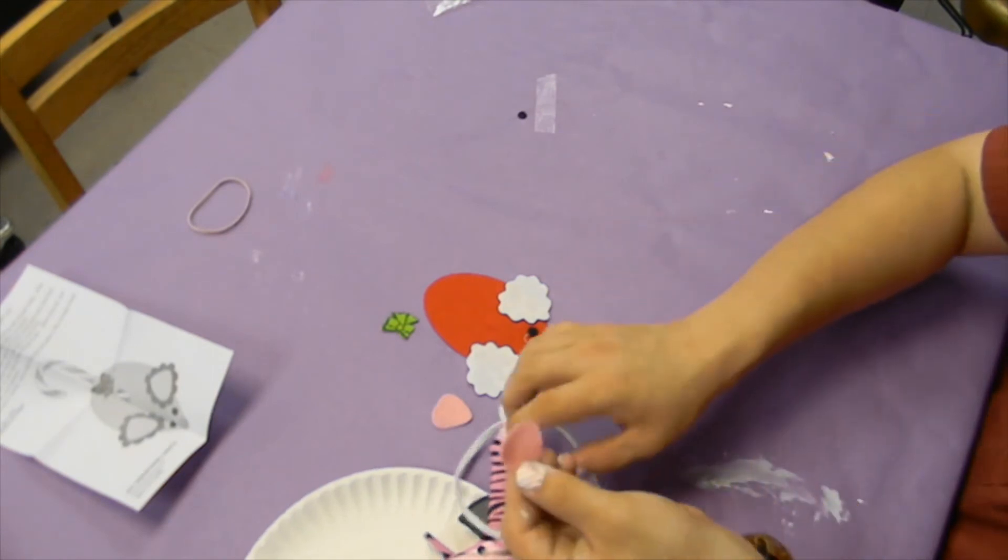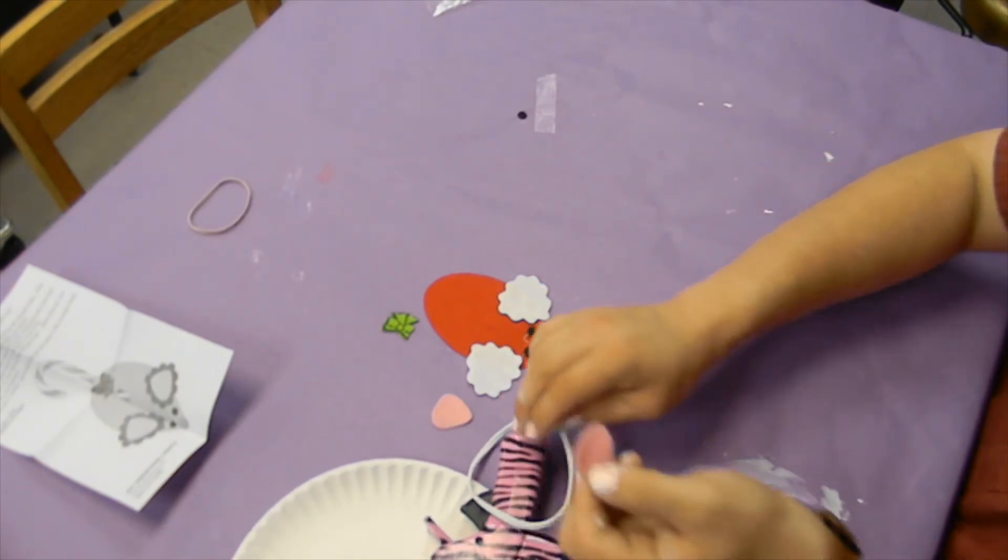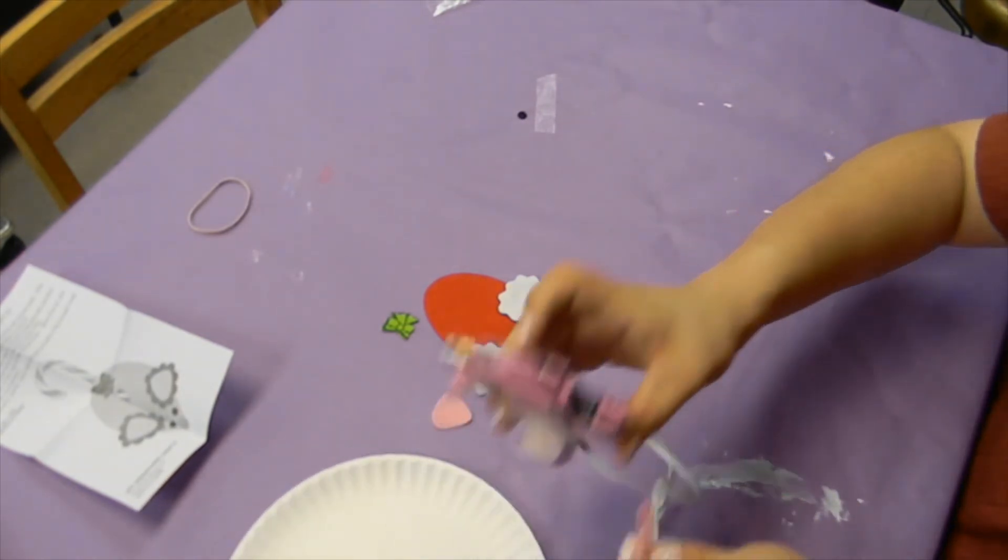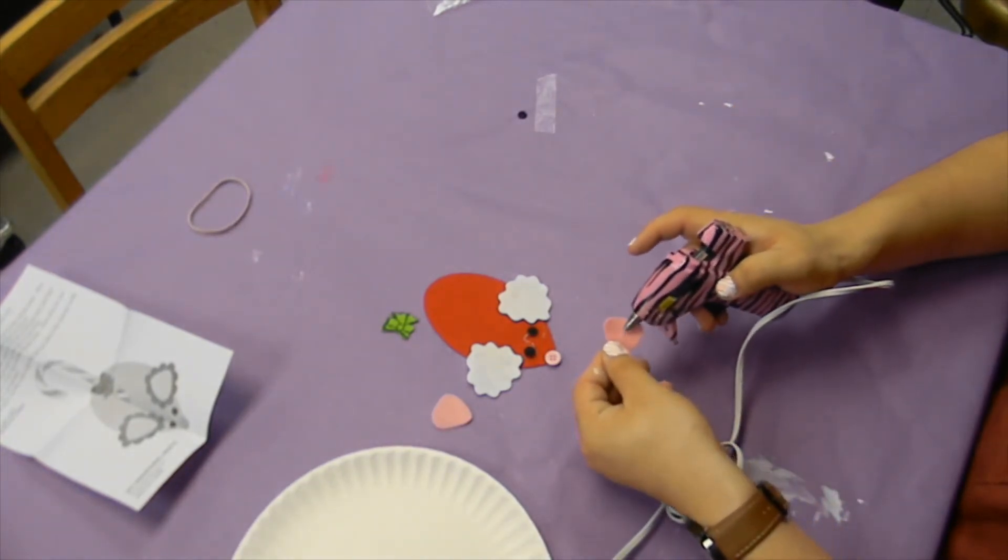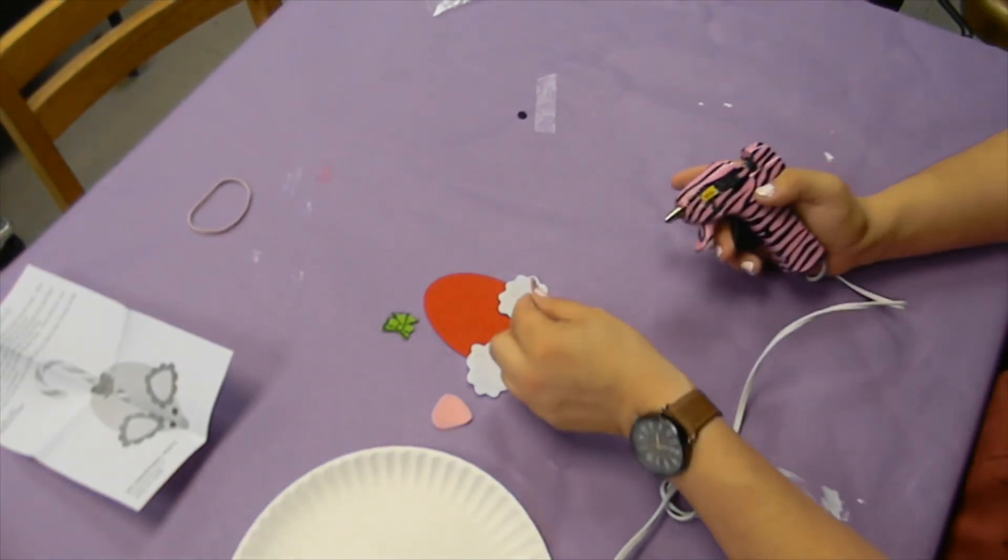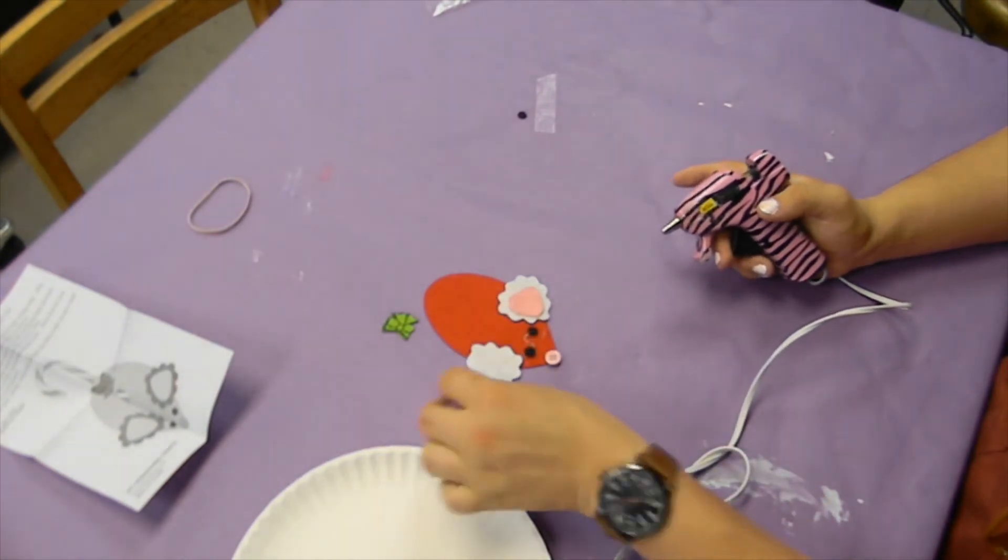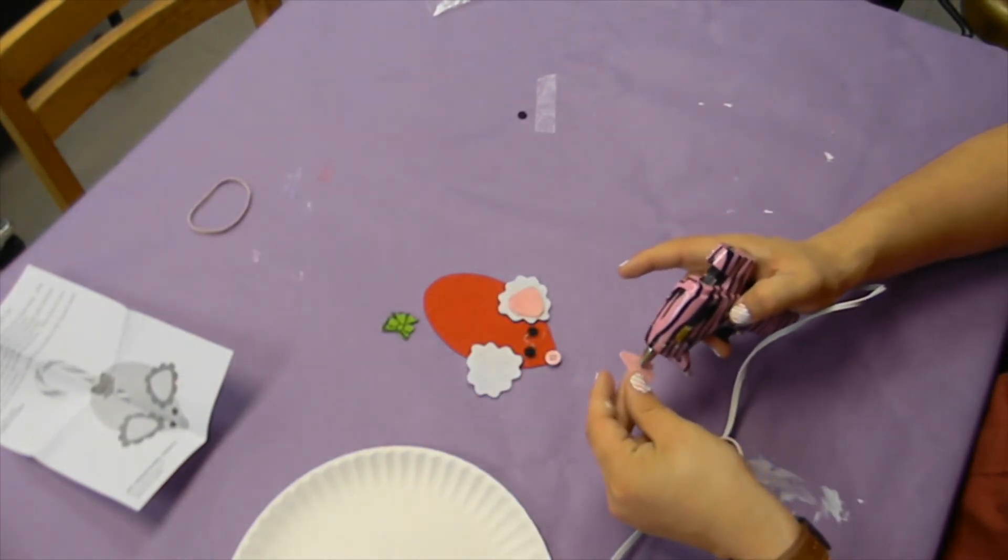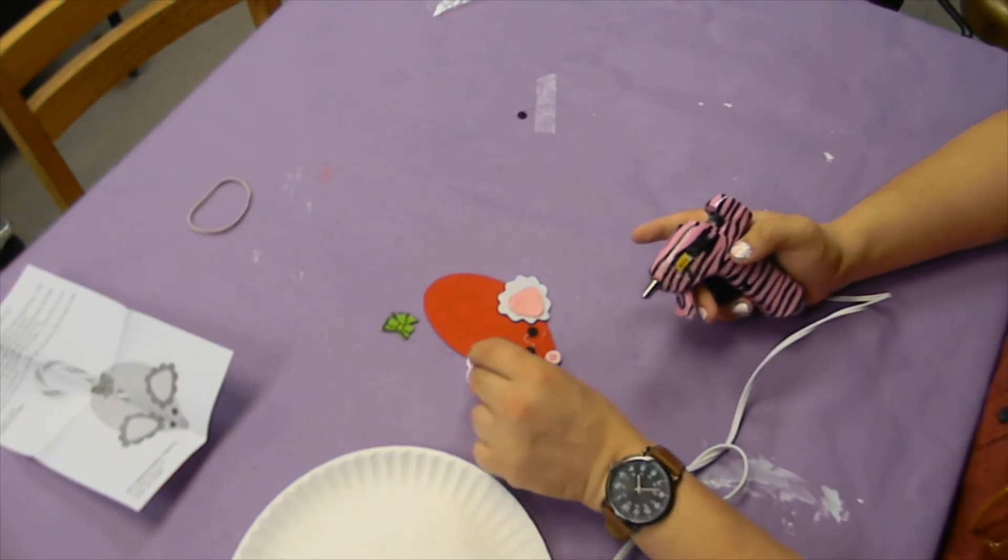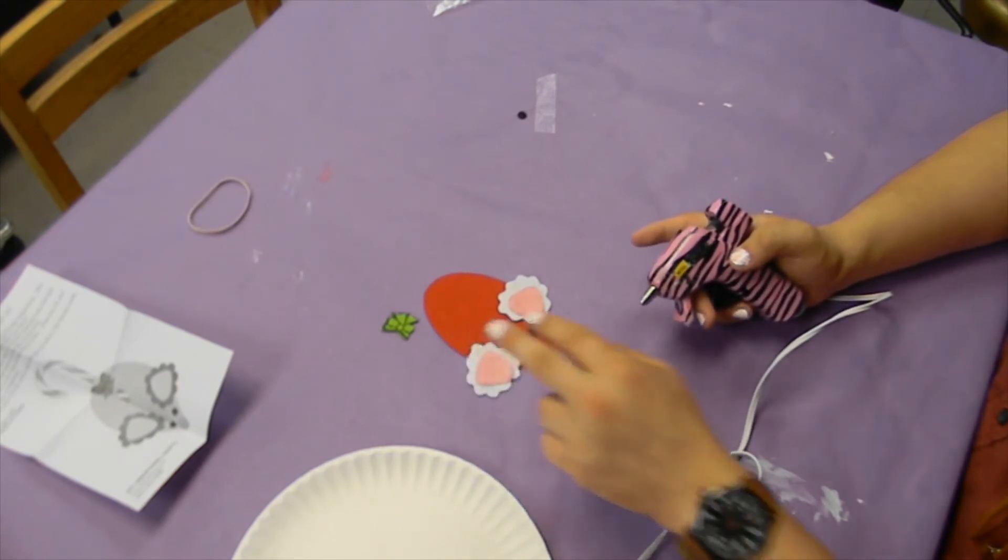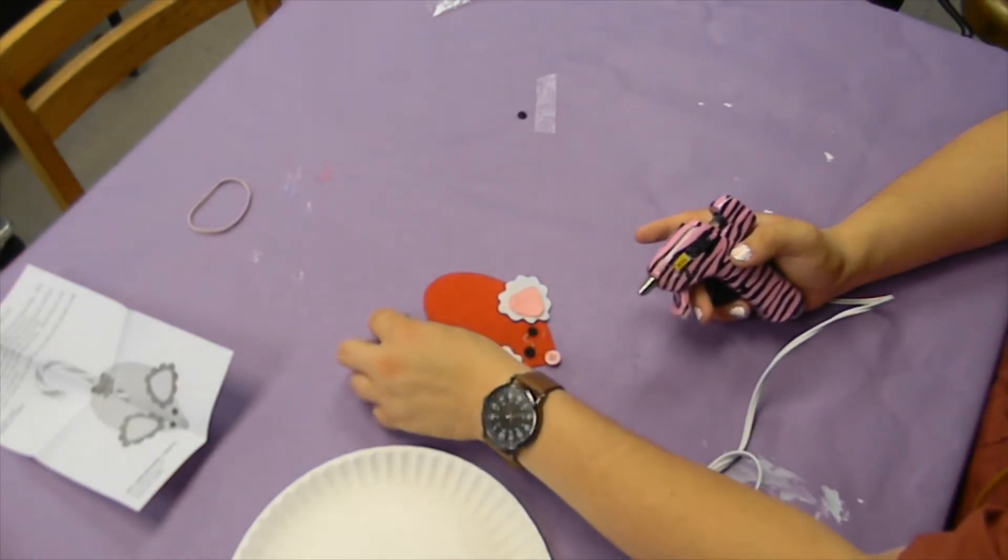Now, you're going to take the little pink things, they look like this, and you're going to put glue on the back, and make sure that it goes onto the white little part. And that way it represents the ears.